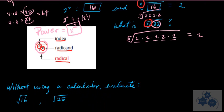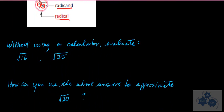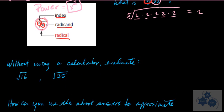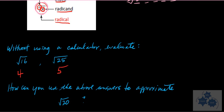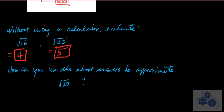Without using a calculator: what is the square root of 16? 4. Very good — because 4 times 4 is 16. What's the square root of 25? 5. 25 and 16 are perfect squares, which is why the result is a whole number, or at least an integer.